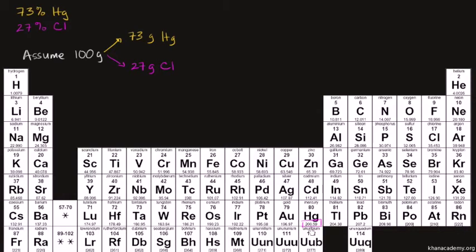And the atomic weight here for mercury is 200.59. So that means, let me write this right over here. So one mole of mercury is 200.59 grams.